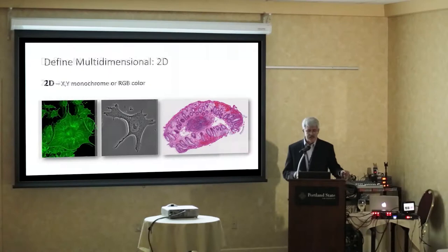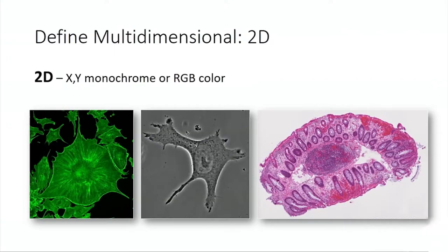Let's jump right into it. We talked about multidimensional — so what does multidimensional mean? Let's start at the beginning. You all know what 2D is: 2D is flatland, and you're dealing essentially with a monochrome image or an RGB image. It's still a one-shot deal — you're dealing with a two-dimensional plane, XY. Fairly straightforward.